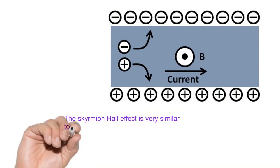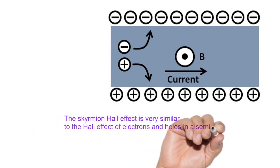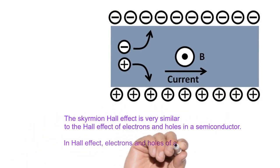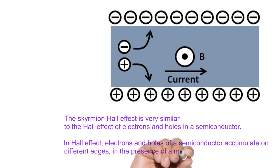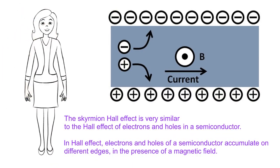Skyrmion Hall effect is very similar to the Hall effect of electrons and holes in a semiconductor. In Hall effect, electrons and holes of a semiconductor accumulate on different edges in the presence of a magnetic field.